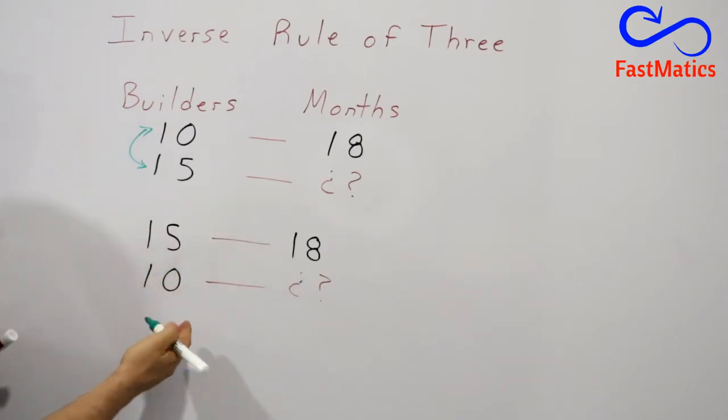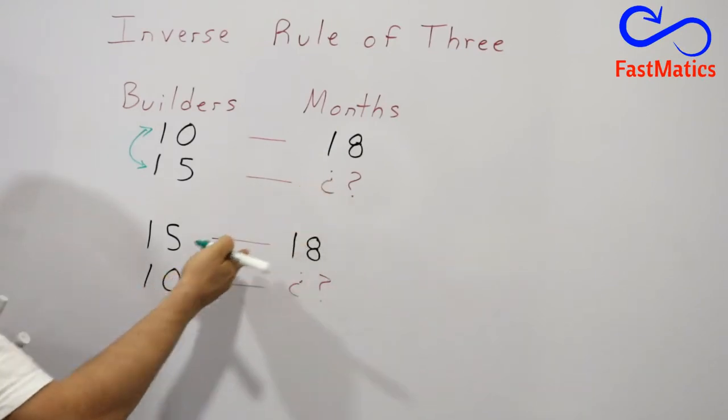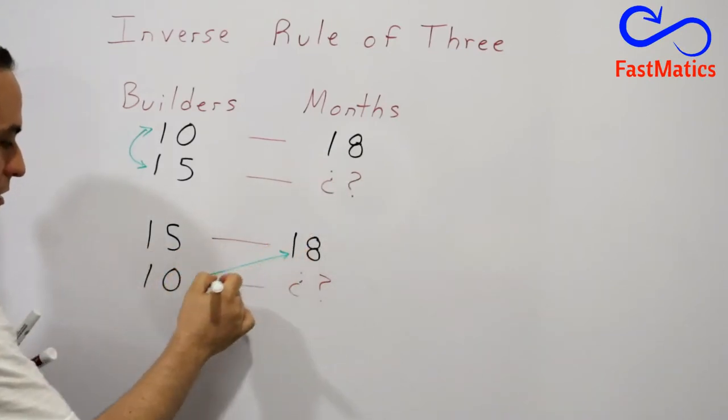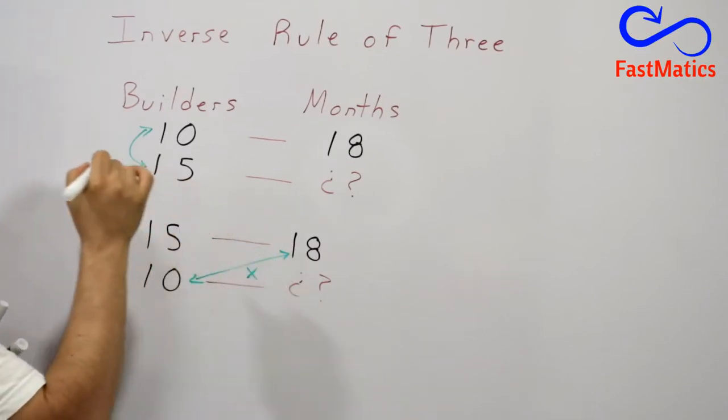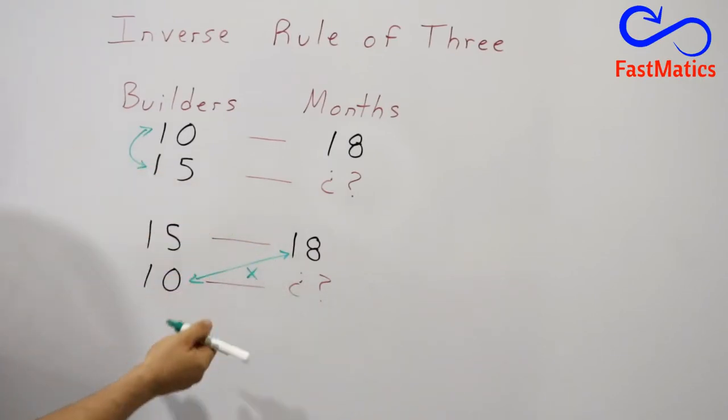Remember, where you have two numbers diagonally, you are going to multiply that and the answer is going to be the number that doesn't have a couple diagonally.